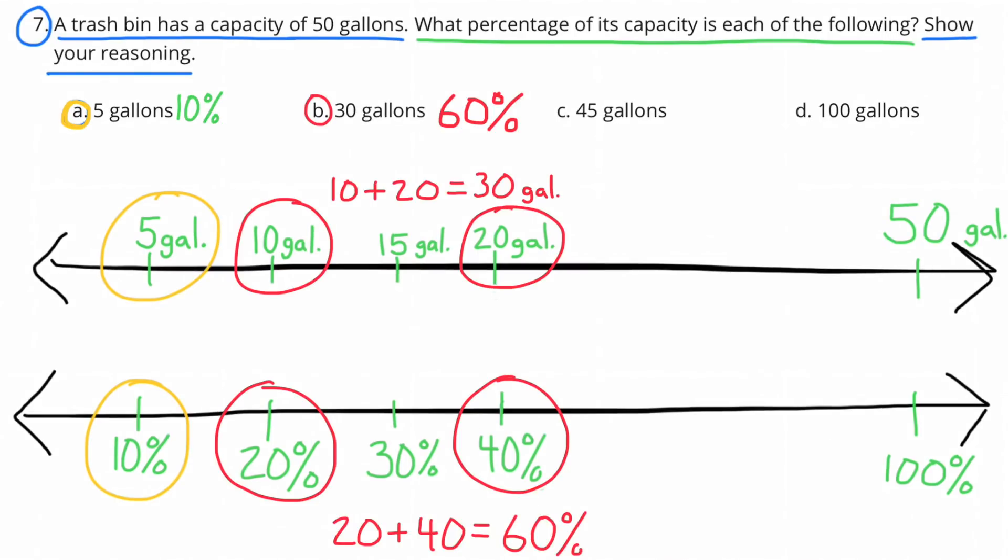B. 30 gallons. I doubled the 5 gallons to get 10 gallons, which means I needed to double the 10%, and that gave me 20%. I doubled the 10 gallons to get 20 gallons, and then I doubled the 20% to get 40%. So to represent 30 gallons, I can add 10 gallons plus 20 gallons. That gives me 30 gallons.